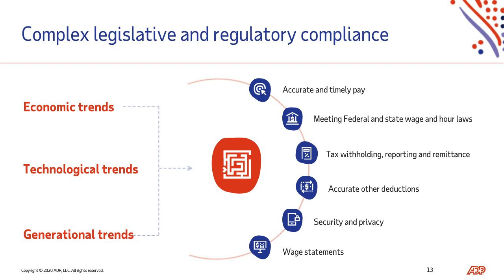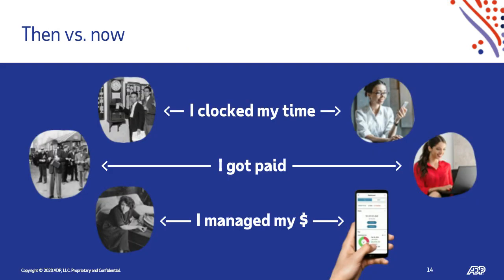Let's switch gears and do a comparison of then versus now. A picture is worth a thousand words. We punched in and out back then — versus now using sophisticated biometrics and mobile devices. We received paper checks back then — and now we have direct deposit, pay cards, touchless pay, and electronic W-2s with the ability to view pay statements and W-2s online or through a mobile app. In terms of managing money, hiding savings under the mattress was a thing, versus now using mobile to split pay into checking and savings accounts. Technology and tools have definitely evolved and helped.